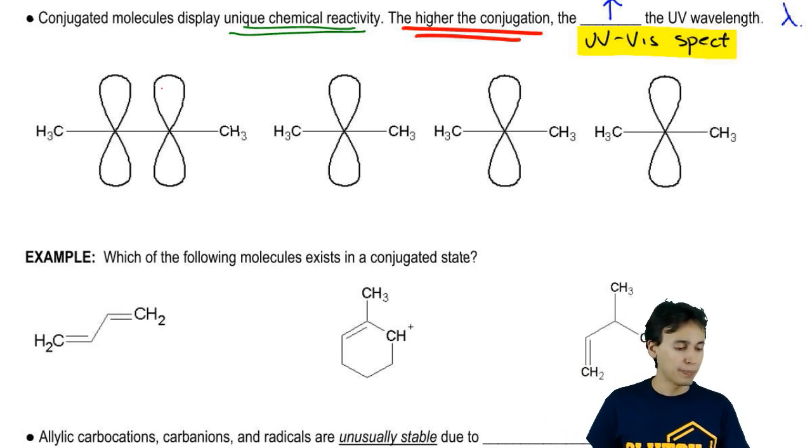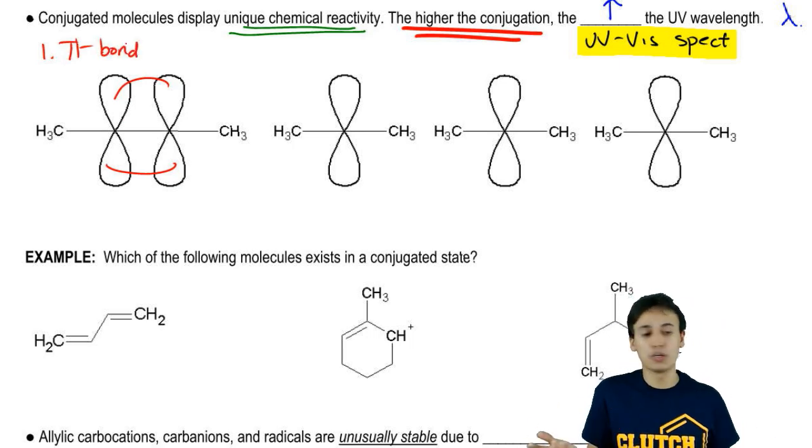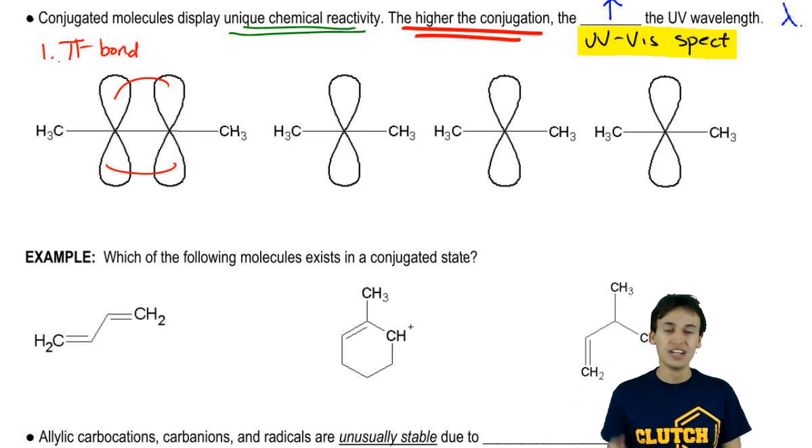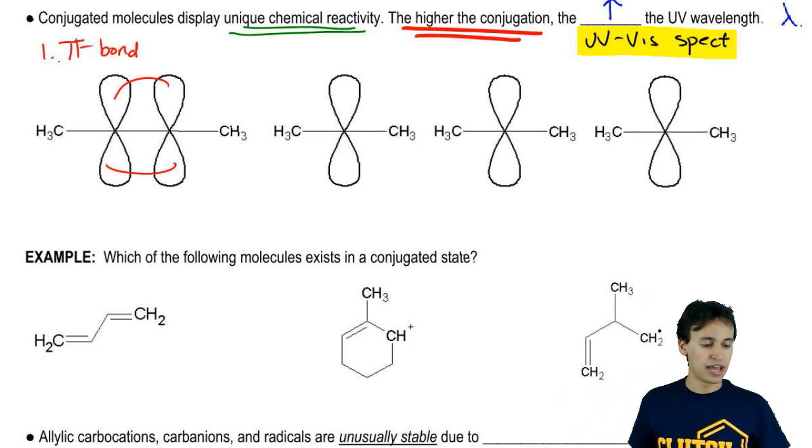We all know that pi bonds can resonate, so we're going to put here one, pi bonds. Now, a pi bond doesn't just have to be a double bond. It could also be a triple bond because we know that triple bonds actually have two pi bonds in them. Double bonds and triple bonds are definitely capable of resonating.